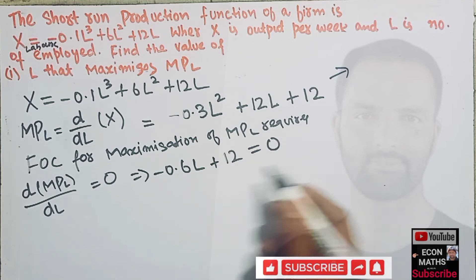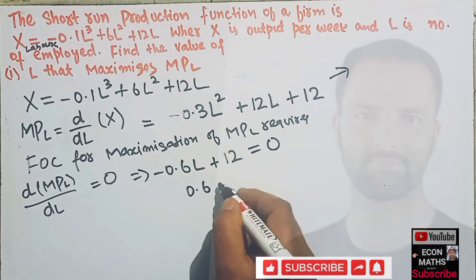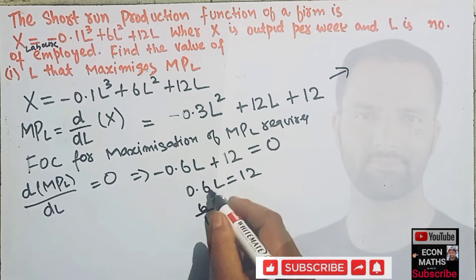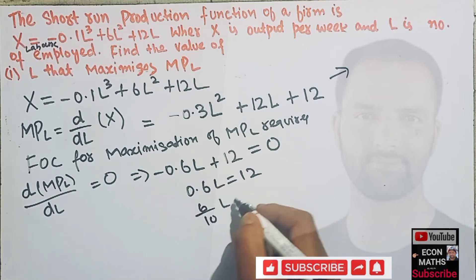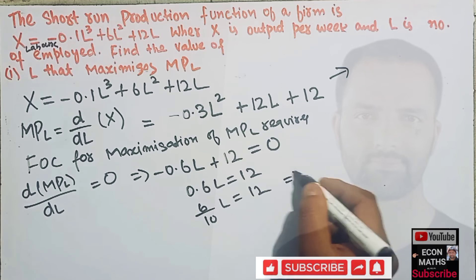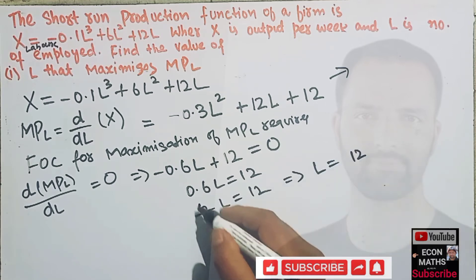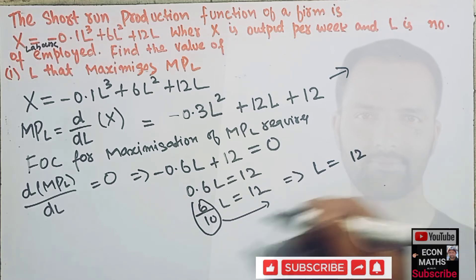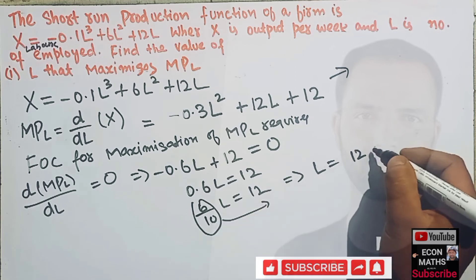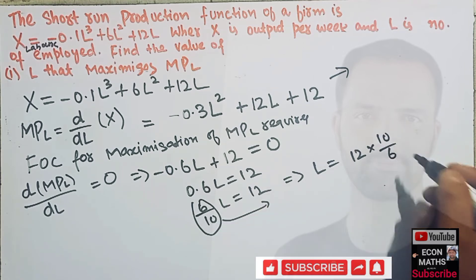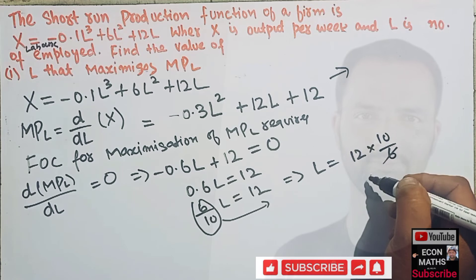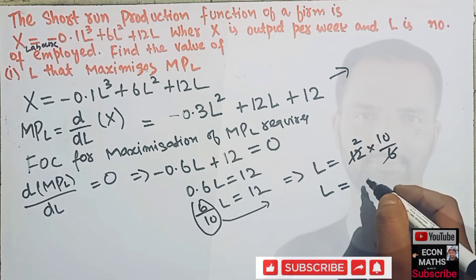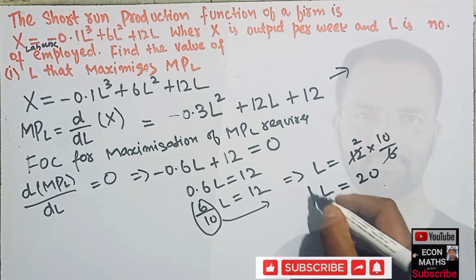Setting it equal to zero: 0.6L equals 12. Since 0.6 can be written as 6 over 10, we have L equals 12 times 10 over 6. This gives L equals 20. So the number of labors that maximizes our marginal product of labor is L equals 20.